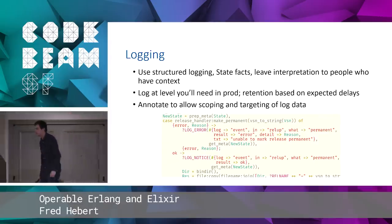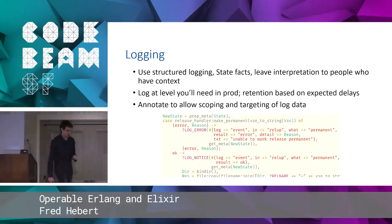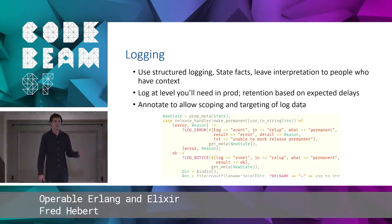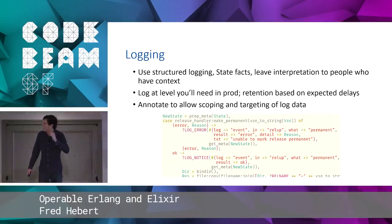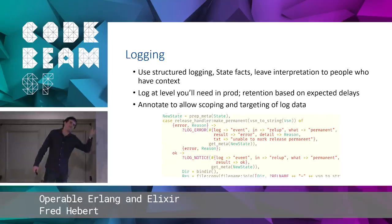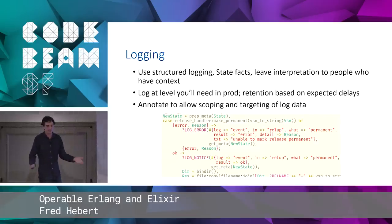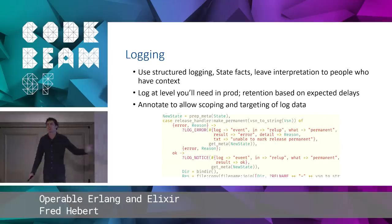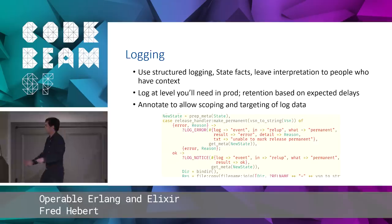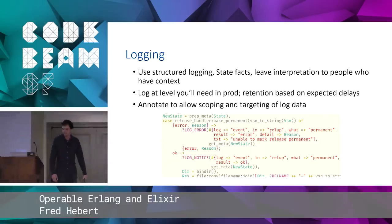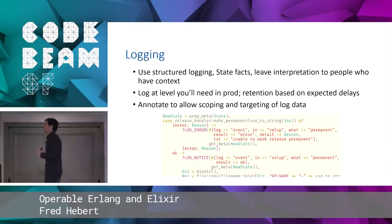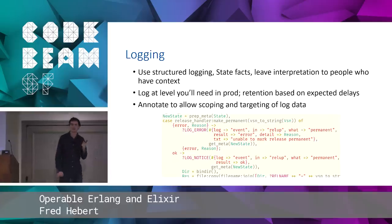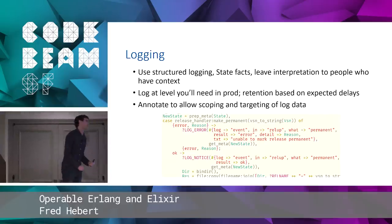Log everything at the level you want it in production. There's nothing worse than going into a system, turning on logs, and then crashing the system because there's too much logging. Also, only log facts — things that are happening. Don't provide interpretation from within the code because you don't have the context. Interpretation should be left to the human.